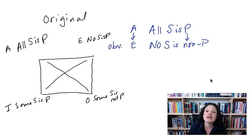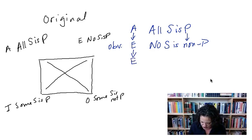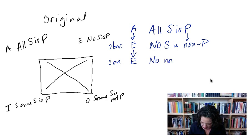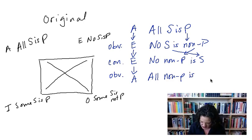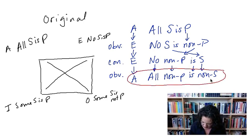But we need to do two more things. We need to now convert that E statement. The rule of conversion for an E statement is: just switch the S and P terms. So this is going to say 'no non P is S.' We're almost to full contraposition. Now we're going to do one more obversion — obvert that E statement to an A statement. It's going to stay universal. So now it says 'all non P is non S.' That is the new A statement for the second square.